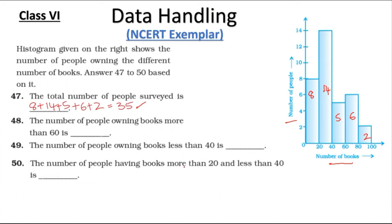Question 48: The total number of people having books more than 60. More than 60 means we have to consider these two classes, so 6 added to 2 is 8.